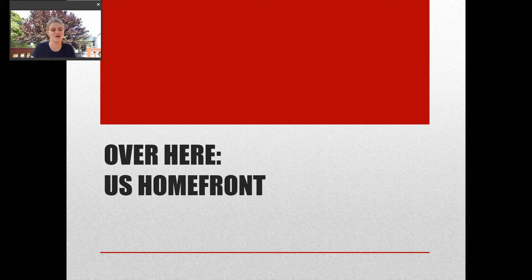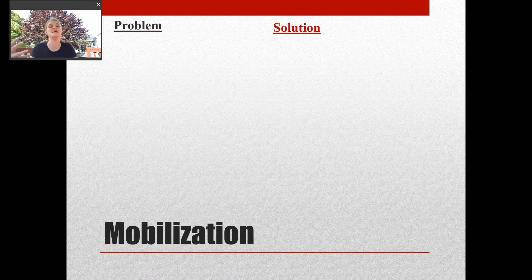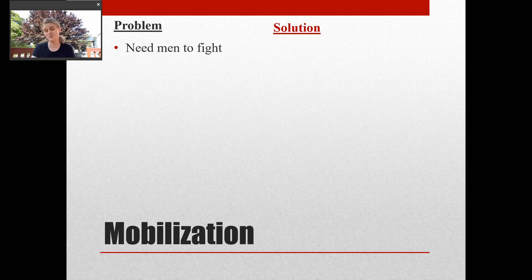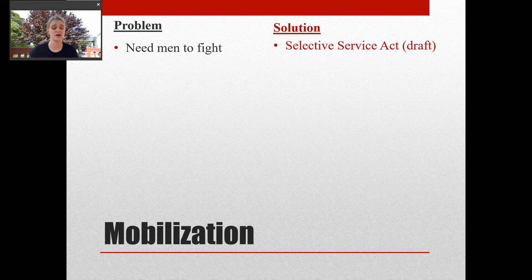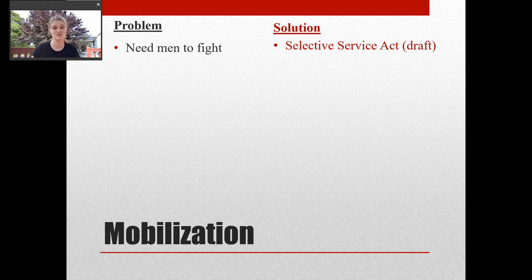Now let's move to the home front — what was going on in America. As the war began, there were several problems to solve. The first: we need men to fight. The solution was the Selective Service Act, the draft. The American Army drafted thousands of men — that cannon fodder needed for the American Expeditionary Force — in order to fight this war.